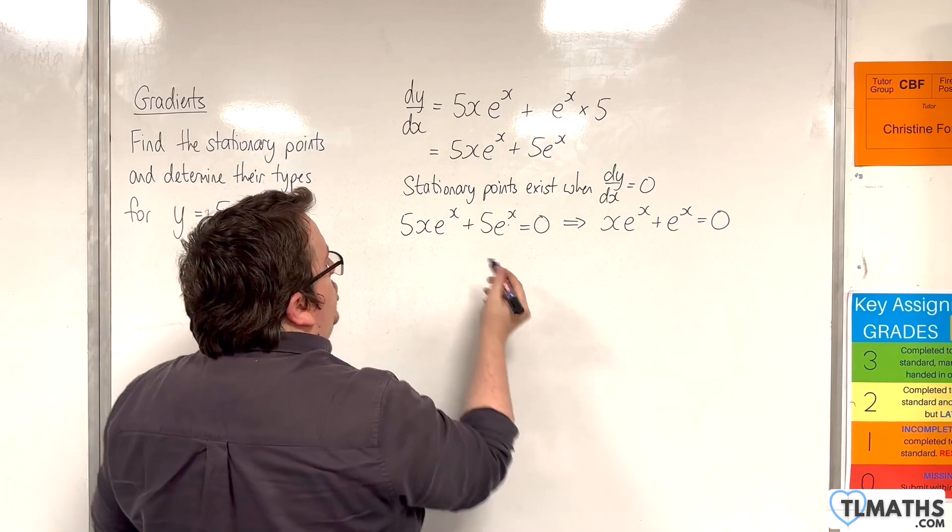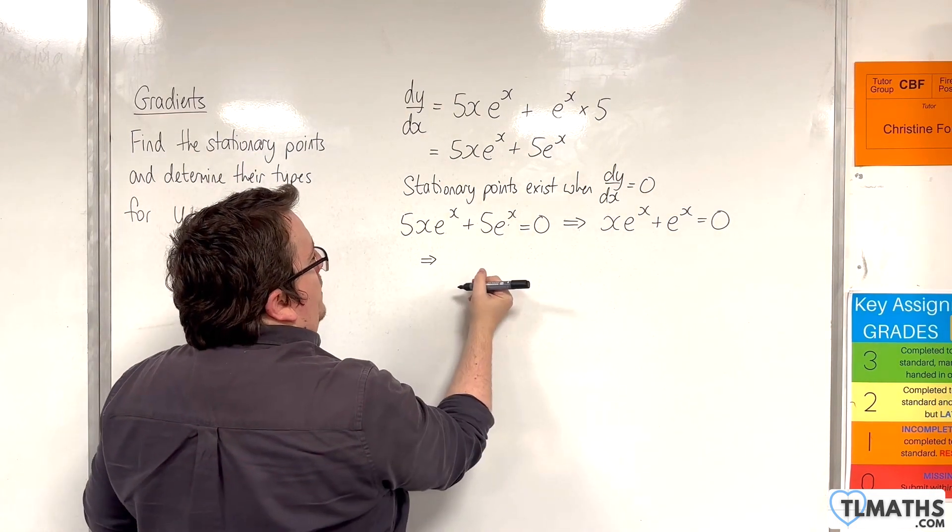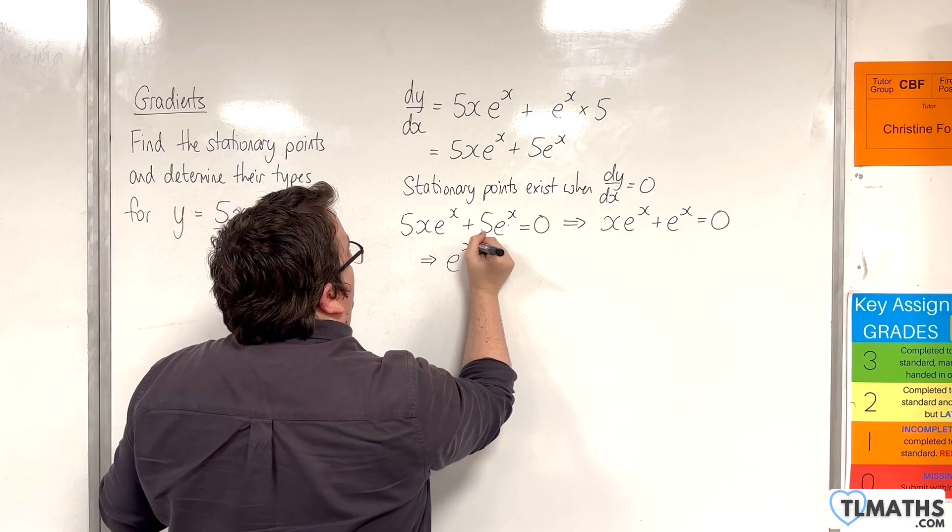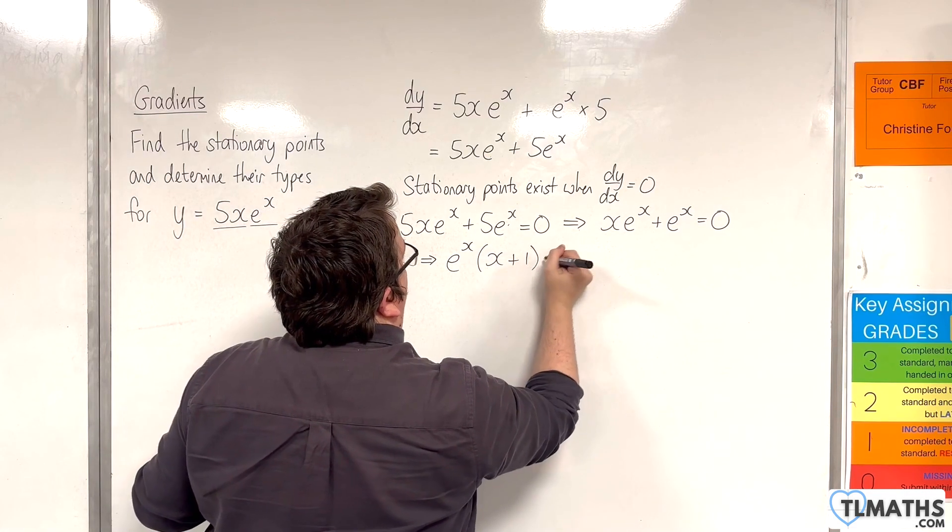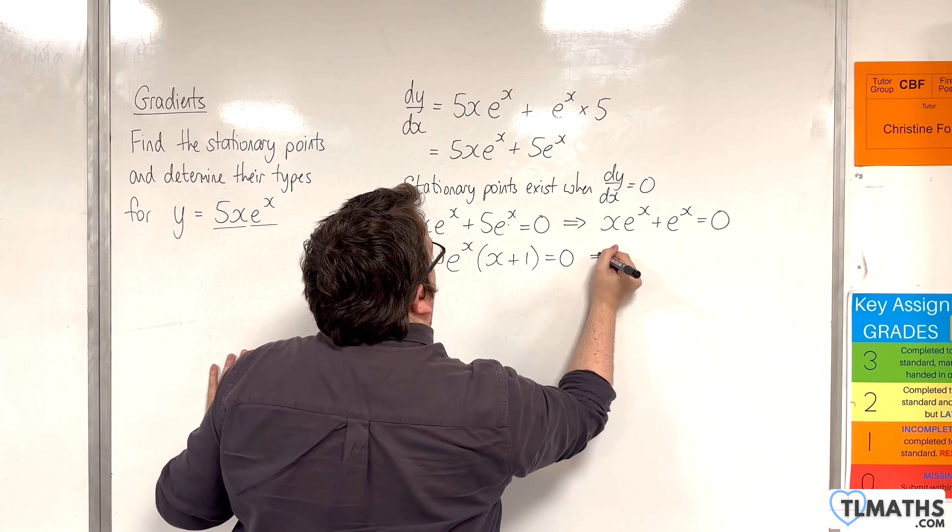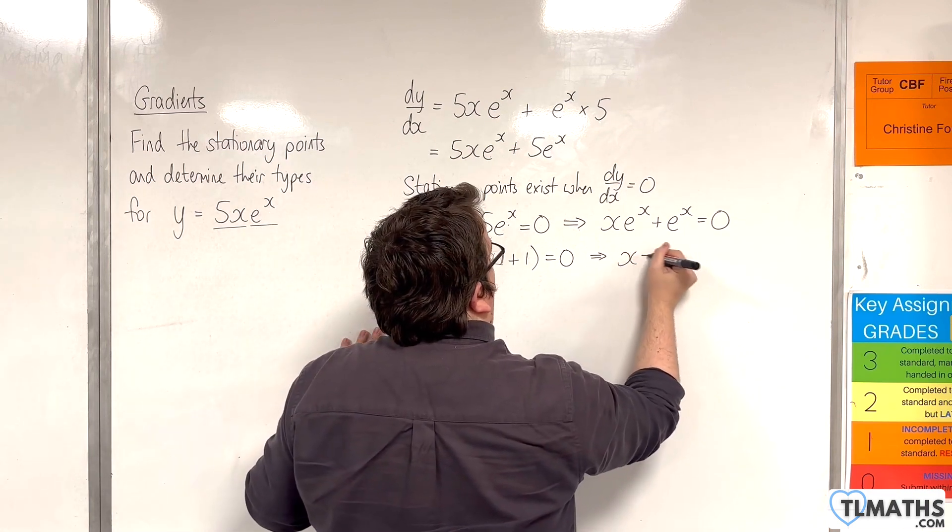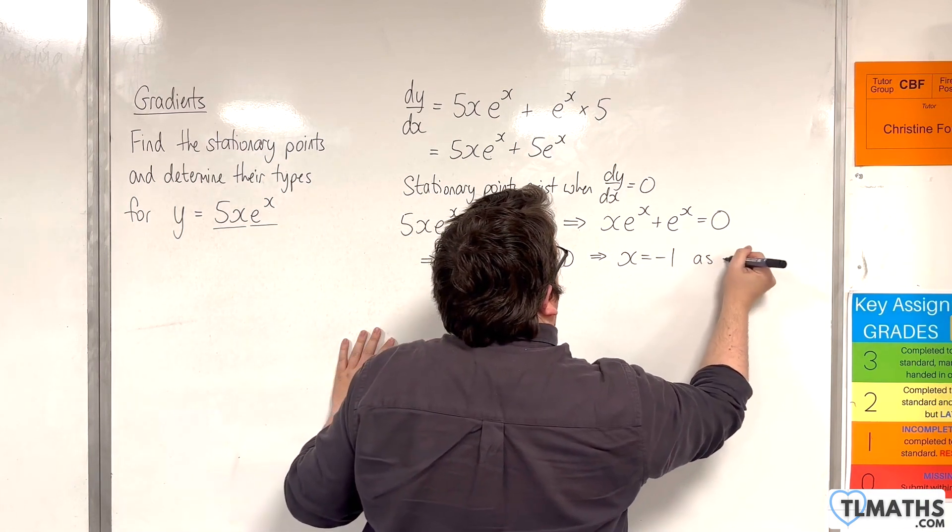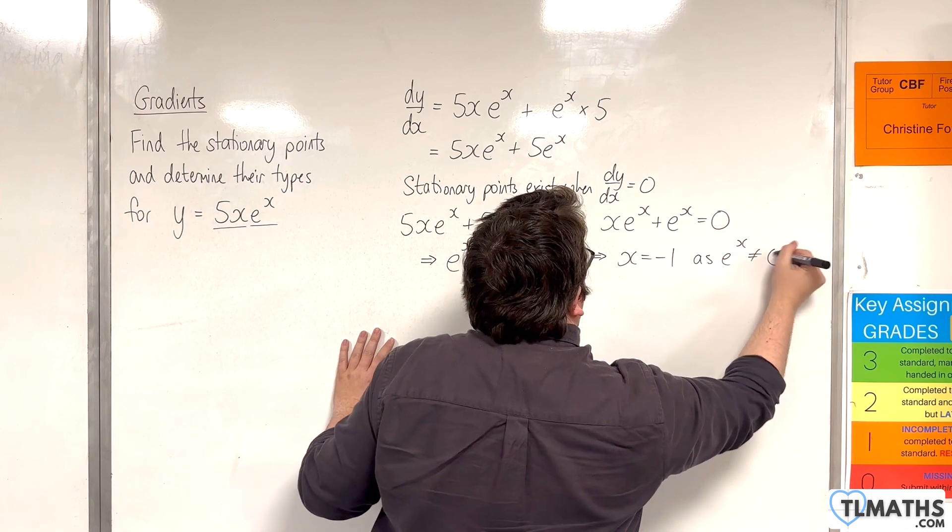Generally I like to factorize this instead. I'll factor out that e to the x and I'll have x plus 1 equals 0. That implies that x must be equal to minus 1, as e to the x cannot be 0.